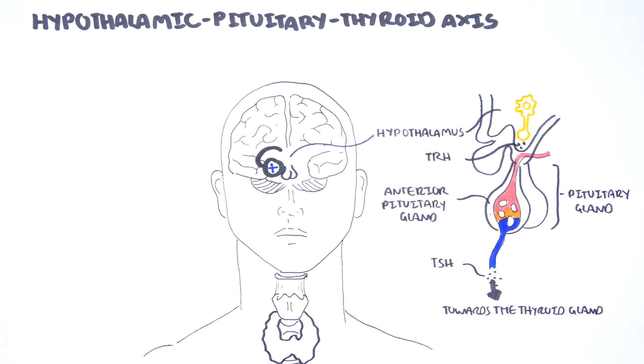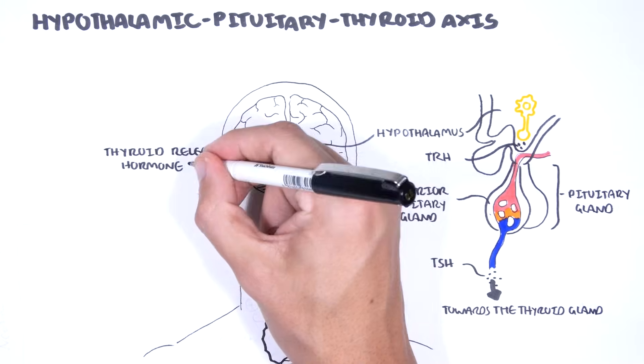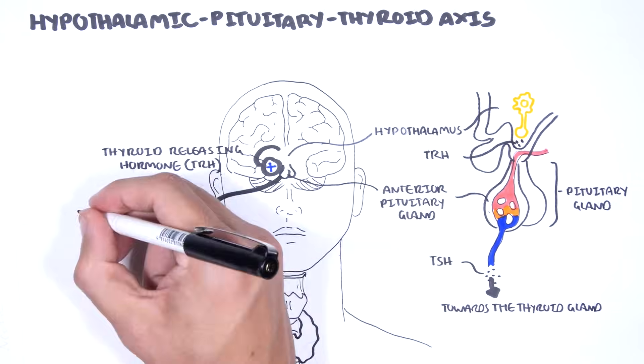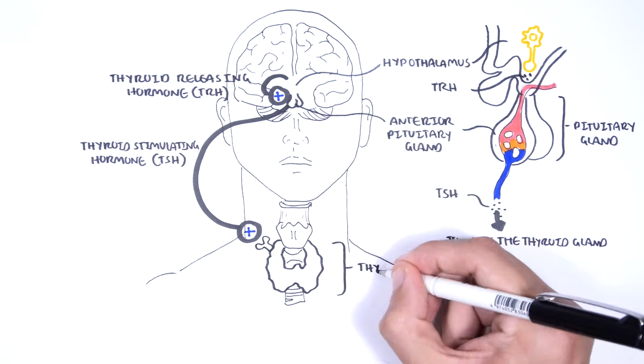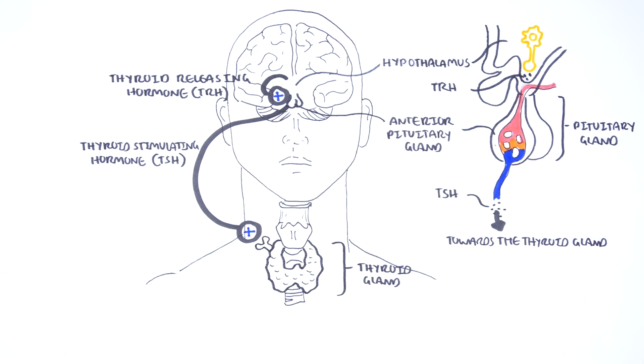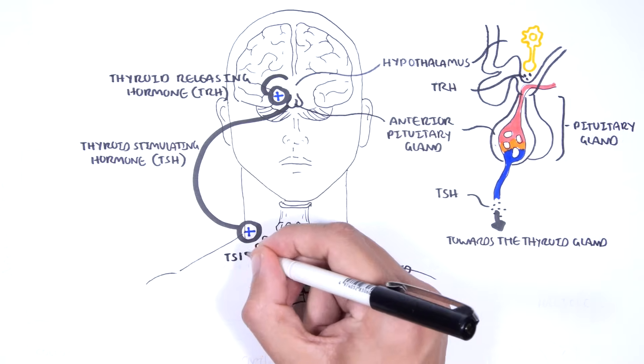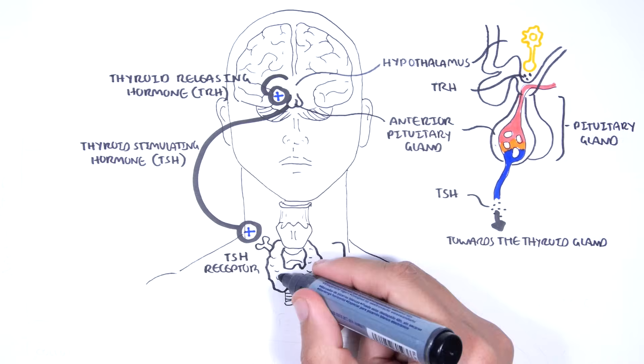Thyrotropin-releasing hormone, TRH, stimulates the synthesis and secretion of thyroid-stimulating hormone, TSH, which acts at the thyroid to stimulate all steps of thyroid hormone biosynthesis and secretion by binding onto thyroid-stimulating hormone receptors.